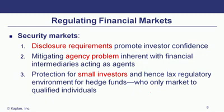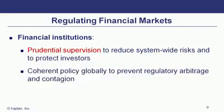Focusing on regulating financial institutions such as banks and investment banks, the key is prudential supervision — really looking to prevent and reduce system-wide risk, like not having one institution fall and creating contagion like Lehman Brothers. Making sure these institutions aren't taking on excessive amounts of risk, and having a coherent policy globally so we're not having regulatory arbitrage where firms go to countries where regulation is more lax — to prevent the contagion effect and system-wide issues that we saw in 2008.